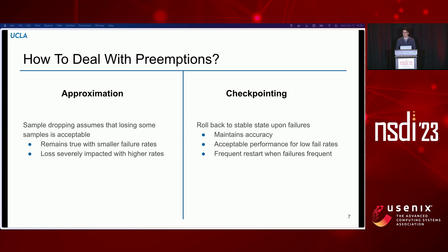In checkpointing, where we save the model and optimizer state every few training iterations, we maintain the state so we don't have to have a trade-off, but it can cause quite a lot of overhead. Both of these preemption techniques work well for lower rates of preemption but have difficulty when preemptions become more common.